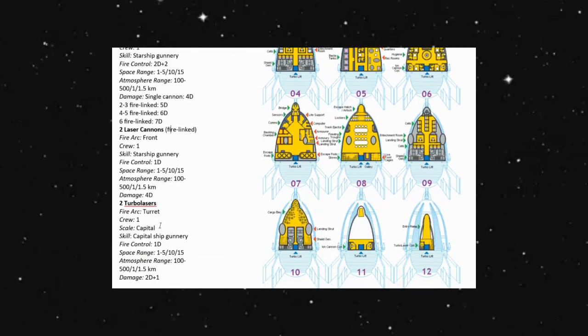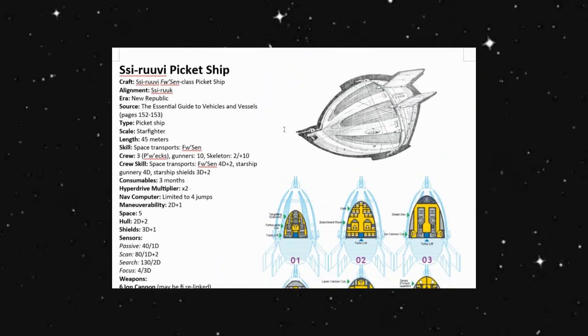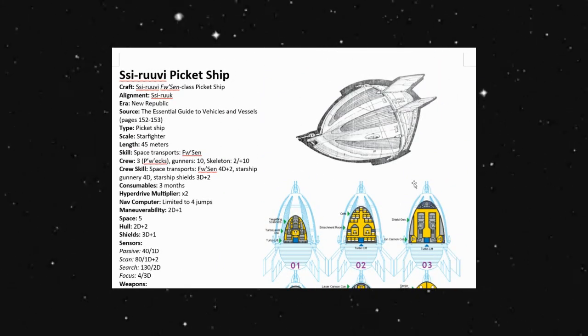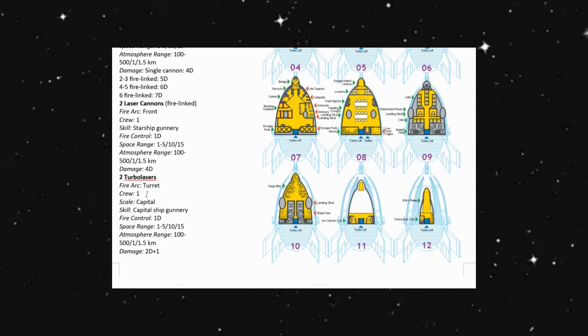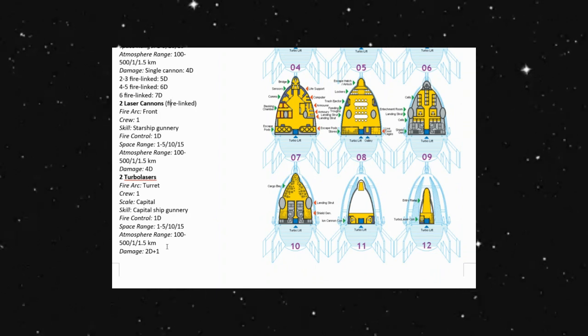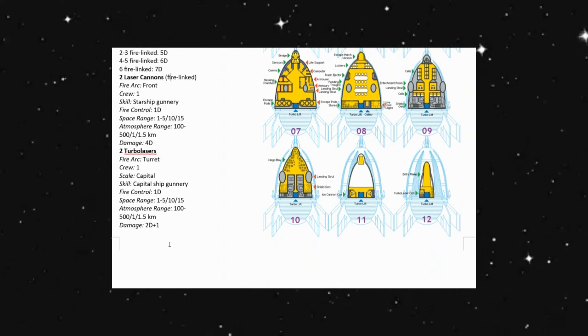And then last but not least, we have two turbolasers. Looking at our design, we have one cannon up here, one down here. I'm going to guess those are our turbolasers. Has a crew of one each, fire control of 1D and damage of 2D plus one. That's all we've got on this.